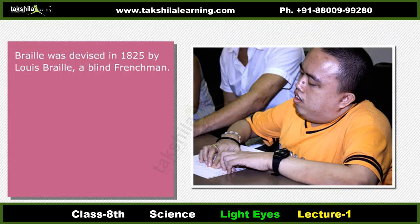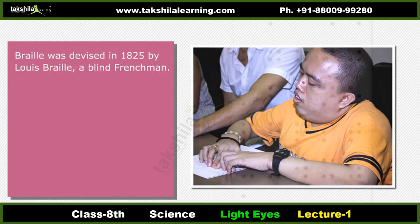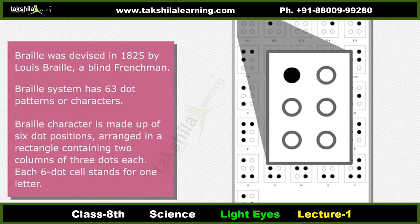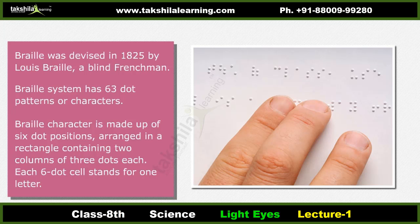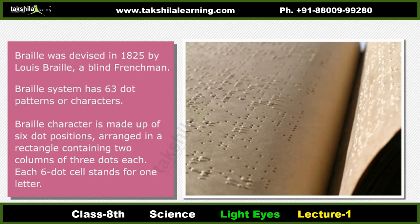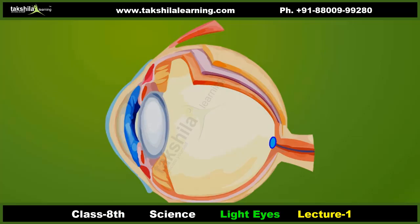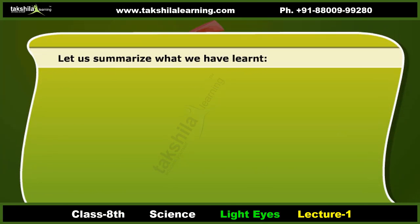Braille was devised in 1825 by Louis Braille, a blind French man. Braille is a writing system which enables blind and partially sighted people to read and write through touch. The Braille system has 63 dot patterns or characters. Each Braille character is made up of six dot positions arranged in a rectangle of two columns of three dots. Each character represents a letter, a combination of letters, a common word, or a grammatical sign. Visually challenged people learn Braille by beginning with letters, then special characters and letter combinations.